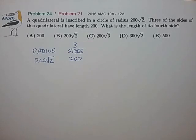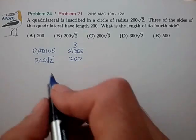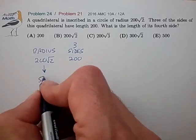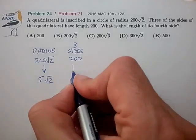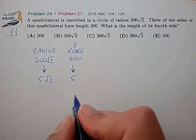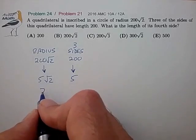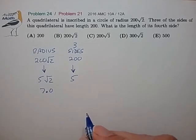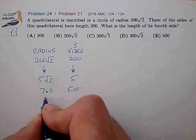And for my purposes, the best scale factor here is to bring 200 root 2 down to 5 root 2, and 200 down to 5. So 5 root 2, that's very convenient. That's 7.0 centimeters, and 5, 5.0 centimeters.